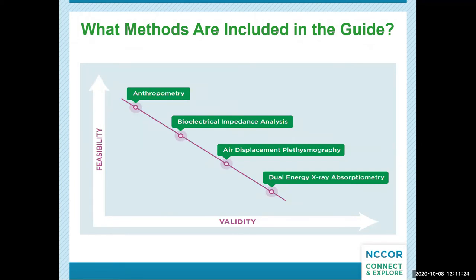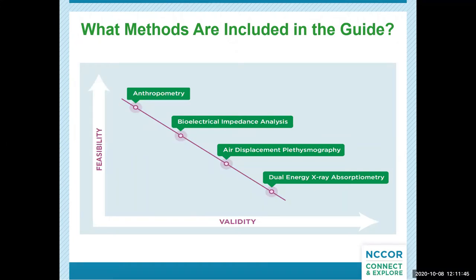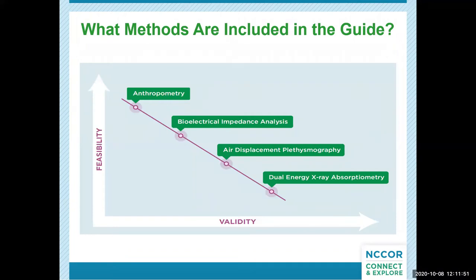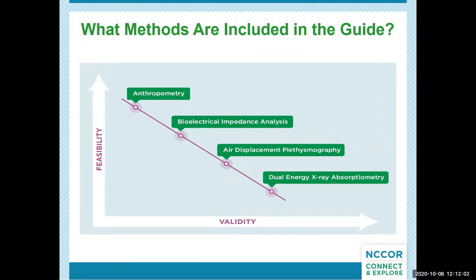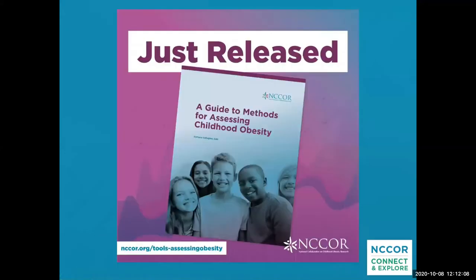The guide covers the following methods: anthropometry, which includes length, stature, weight, skinfolds, and waist circumference; bioelectrical impedance analysis; air displacement plethysmography; and dual energy X-ray absorptiometry, or DEXA. They are presented in the order seen here, which essentially follows how they fall on the feasibility-validity continuum. All of these methods estimate adiposity through various means explained in detail in the guide. I'm going to turn it over to Dimpna, who will highlight the various sections in more detail.